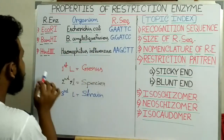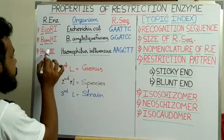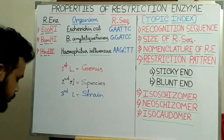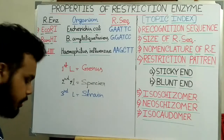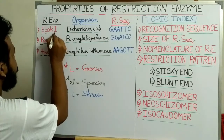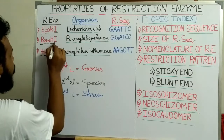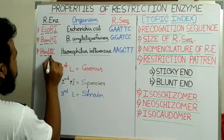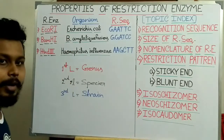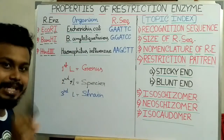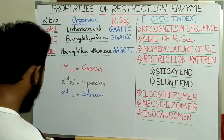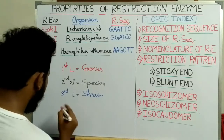For HindIII, the D indicates it is from the D strain of Haemophilus influenzae, from which the HindIII restriction enzyme is isolated. Now the last number: for EcoRI that is 1, for BamHI that is 1, and for HindIII that is 3.